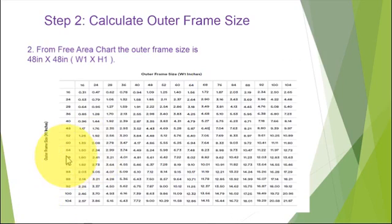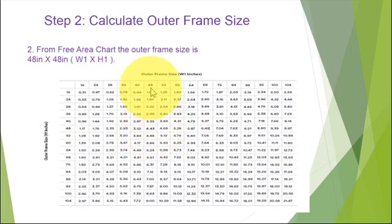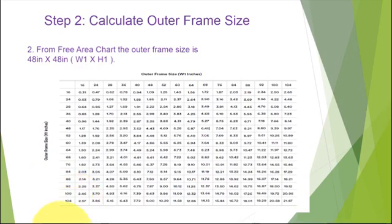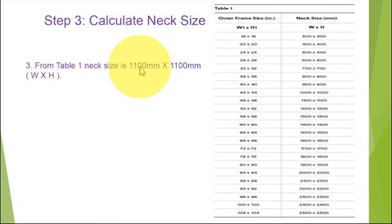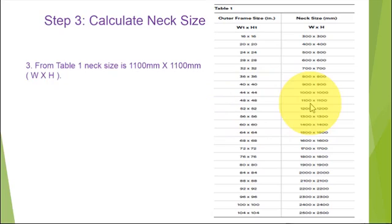We then go to the manufacturer's chart to find the frame size. For example, with a calculated free area of 4.43 square feet, we locate that on the chart and get 48 by 48 inches as the outer frame size. From the next size in the table, 48 by 48 gives 1100 by 1100 mm. By this, we have selected the required size.